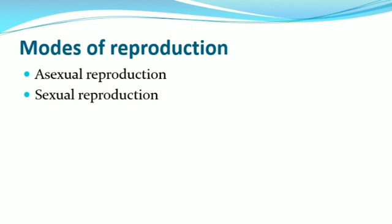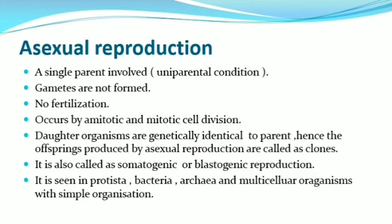Animals reproduce by two major modes of reproduction: asexual reproduction and sexual reproduction. Now we are going to see about asexual reproduction. Reproduction without the formation and fusion of gametes is called asexual reproduction.